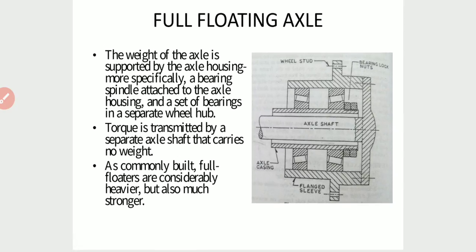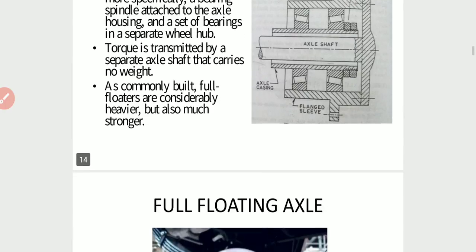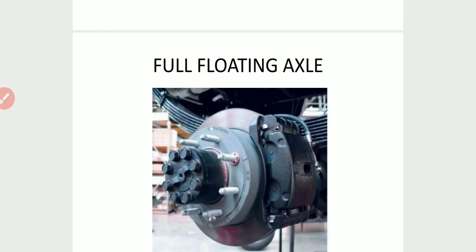With a full-floating axle, the weight is supported by the axle housing — more specifically, by a bearing spindle attached to the axle housing and a set of bearings in a separate wheel hub. Torque is transmitted by a separate axle shaft that carries no weight. Full-floating axles are considerably heavier but much stronger. This is the full-floating axle diagram.